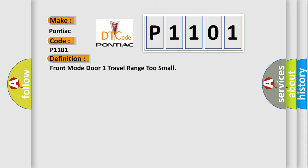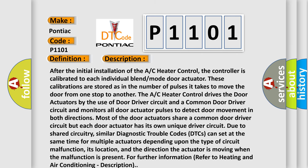Here is a short description of this DTC code. After the initial installation of the AC heater control, the controller is calibrated to each individual blend mode door actuator. These calibrations are stored as the number of pulses it takes to move the door from one stop to another. The AC heater control drives the door actuators by the use of a door driver circuit and a common door driver circuit, and monitors all door actuator pulses. To detect door movement in both directions, most door actuators share a common door driver circuit, but each door actuator has its own unique driver circuit. Similar DTCs can set at the same time for multiple actuators depending upon the type of circuit malfunction, its location, and the direction the actuator is moving. When the malfunction is present, for further information refer to the heating and air conditioning description.